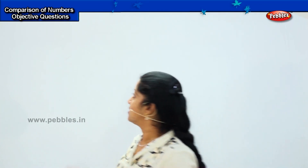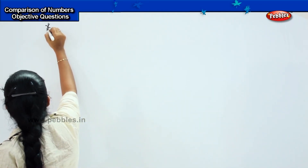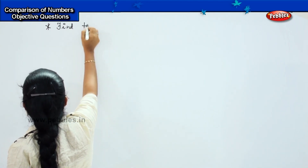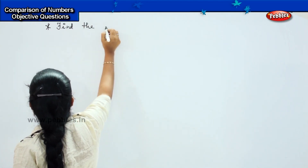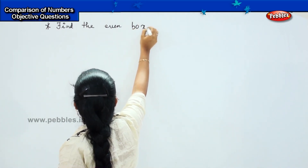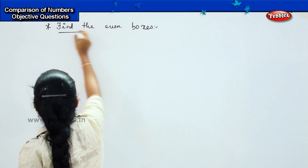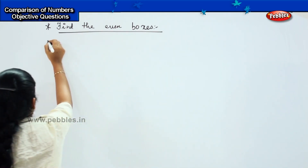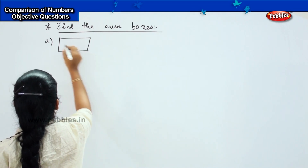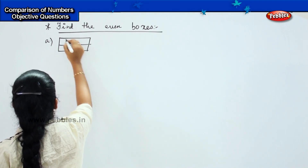You have to see the diagram and then answer the question I am going to ask you. The question says that you have to find the even boxes. See the picture, count the number of boxes and then you need to tell me the right answer.